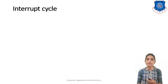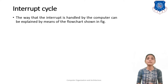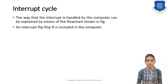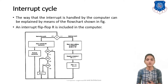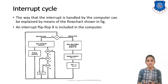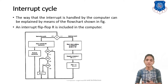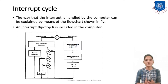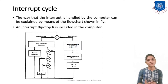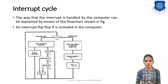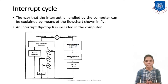So let me see how we can design this interrupt cycle. The way that the interrupt is handled by this computer we can explain by this figure. In this we have used one extra flip-flop R, known as the interrupt flip-flop. If it is 0 that means you have to execute your normal instruction. If it is 1 then you have to execute your interrupt cycle. If it is 0 then you have to fetch and decode your instruction and then execute the instruction. After executing, you have to check for the IEN flag.